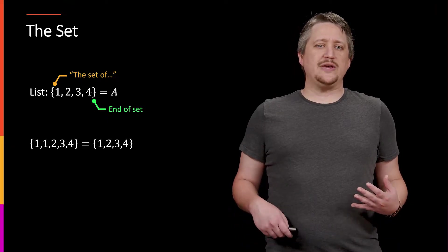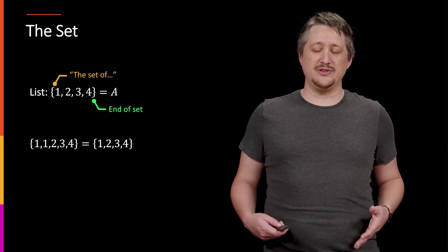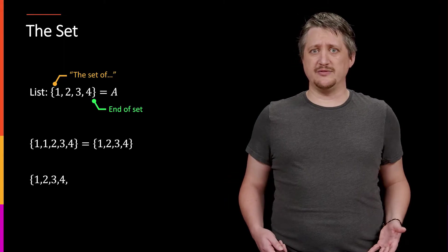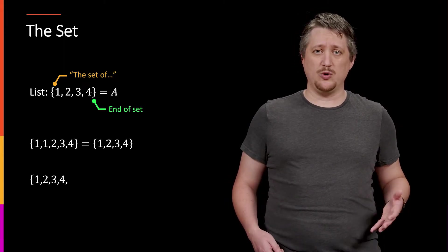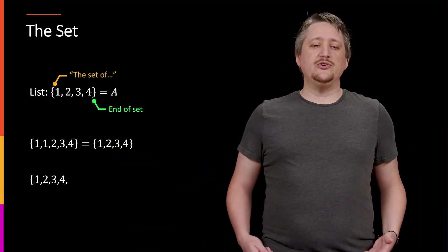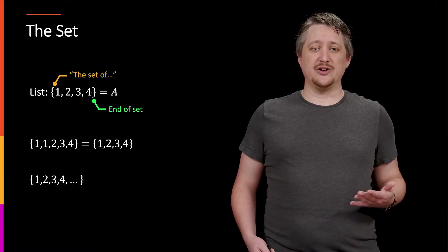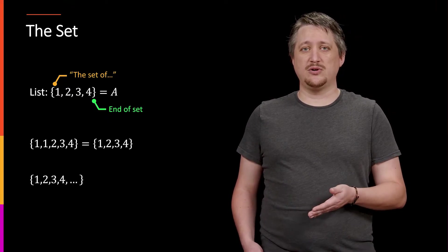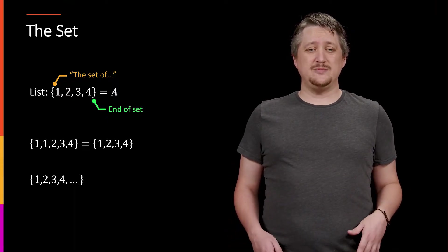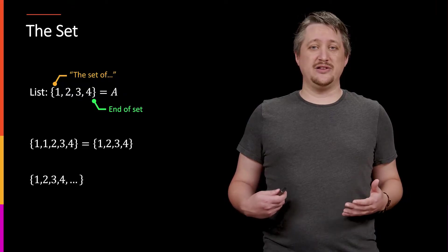And moreover, we can do lists that are infinite. So for example, if we want to do all positive numbers, all positive integers, one, two, three, four, five, six, seven, on and on forever. We can do that by putting in an appropriate dot, dot, dot. So we're going to have the sequence or the set one, two, three, four, et cetera. Now if we're going to do that, obviously we need to be able to establish that pattern.